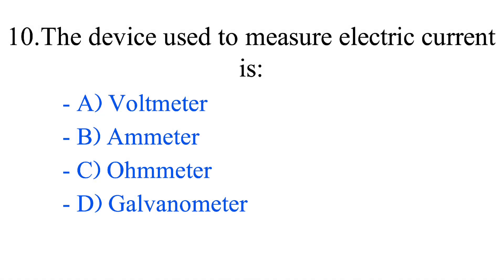Question number 10. The device used to measure electric current is: option A, Voltmeter; option B, Ammeter; option C, Ohmmeter; option D, Galvanometer. The correct answer is option B, Ammeter.